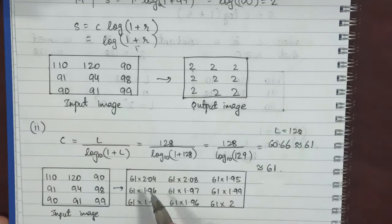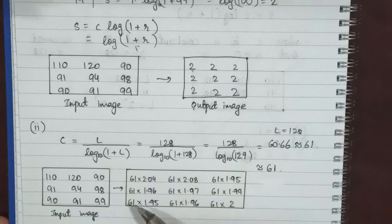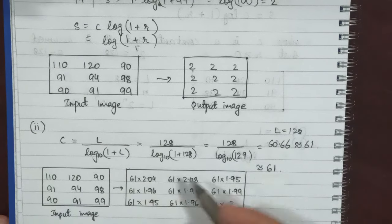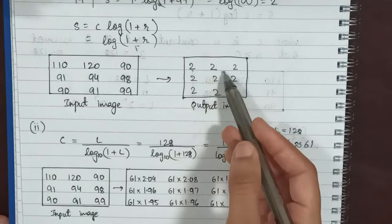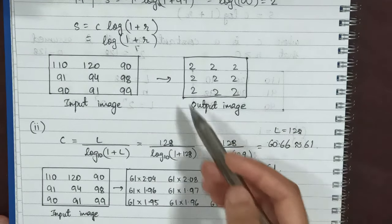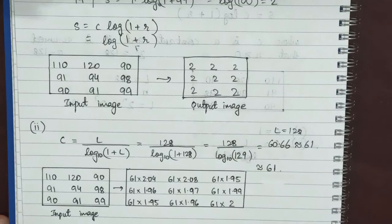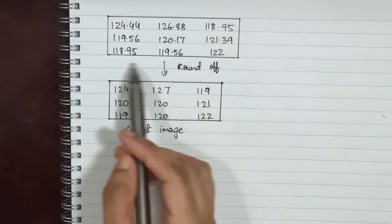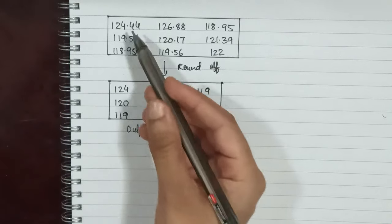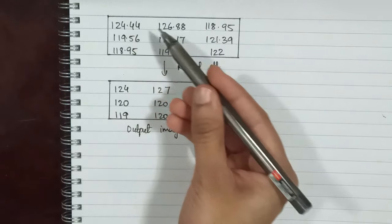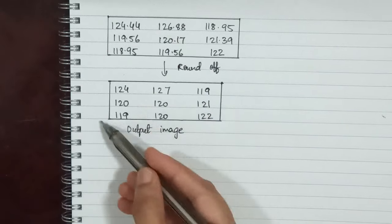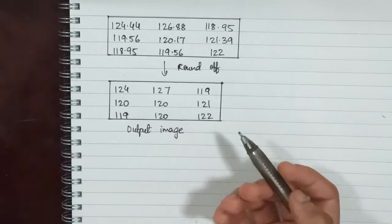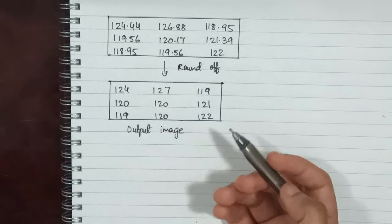We compute 61 × 2.04, 61 × 2.08, and so on for each corresponding value. Importantly, we multiply by the precise values like 2.04 rather than the already-rounded value of 2, so that we get a more precise and accurate output image. After rounding each final pixel value, we obtain our output image.